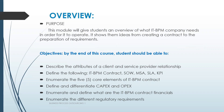For the overview, this module will give students an overview of what an ITBPM company needs in order for it to operate. It shows the ideas from creating a contract to the preparation of requirements. By the end of this course, you'll be able to describe the attributes of a client and service provider relationship; define ITBPM contract terms such as SOW, MSA, SLA, and KPI; enumerate the five core elements of an ITBPM contract; define and differentiate capital expenditure and operational expenditure; enumerate ITBPM contract financials; and enumerate the different regulatory requirements.